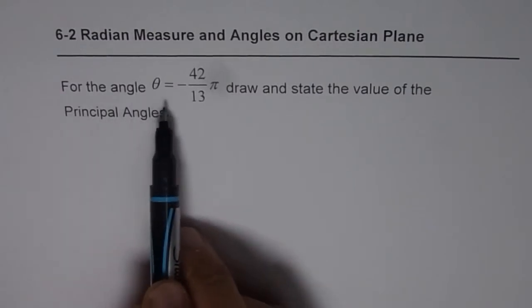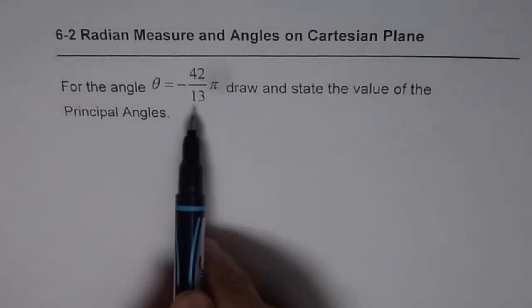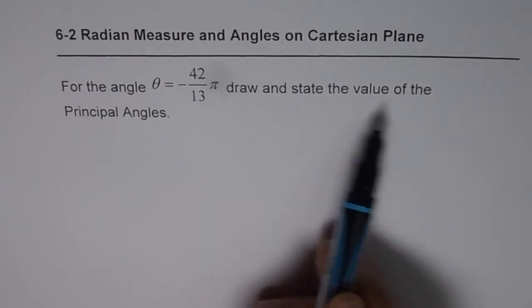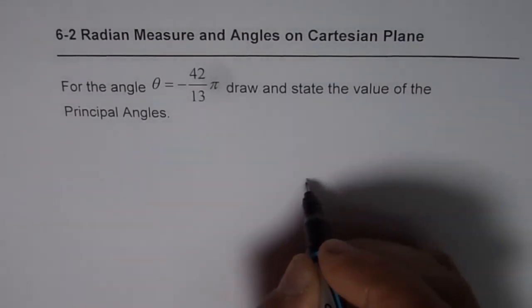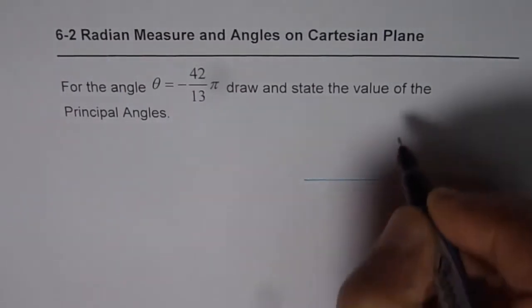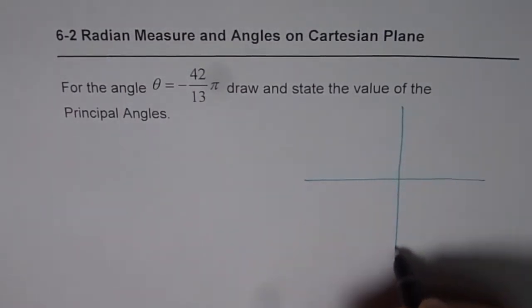For the angle θ equals minus 42 over 13 π, draw and state the value of the principal angle. It is seemingly a simple question, but here we can actually understand a lot of concepts.